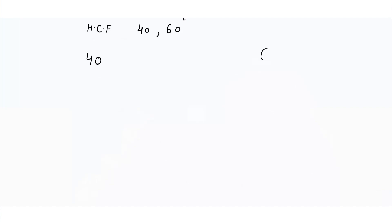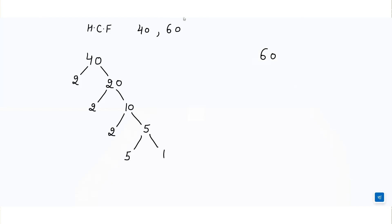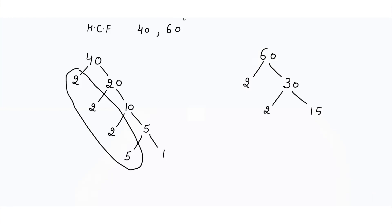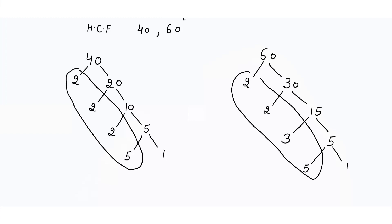Similarly, let's find the HCF of 40 and 60. We will make the prime factors of 40 and 60 using a factor tree. If I divide 40 by 2 I get 20, divide 20 by 2 I get 10, divide 10 by 2 I get 5, divide 5 by 5 I get 1 — those are the factors of 40. For 60, dividing by 2 gives 30, then 30 by 2 gives 15, then 15 by 3 gives 5, and 5 by 5 gives 1.